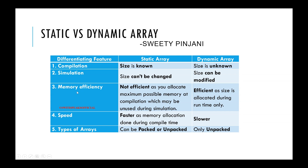The third point is memory efficiency. In case of static array, it is not efficient because you have to allocate the memory at compile time during declaration itself. Due to this, you have to allocate the maximum possible memory, which might not be completely used during simulation. That's why it's not efficient in terms of memory. However, dynamic array is very efficient in terms of memory because size is allocated during runtime.